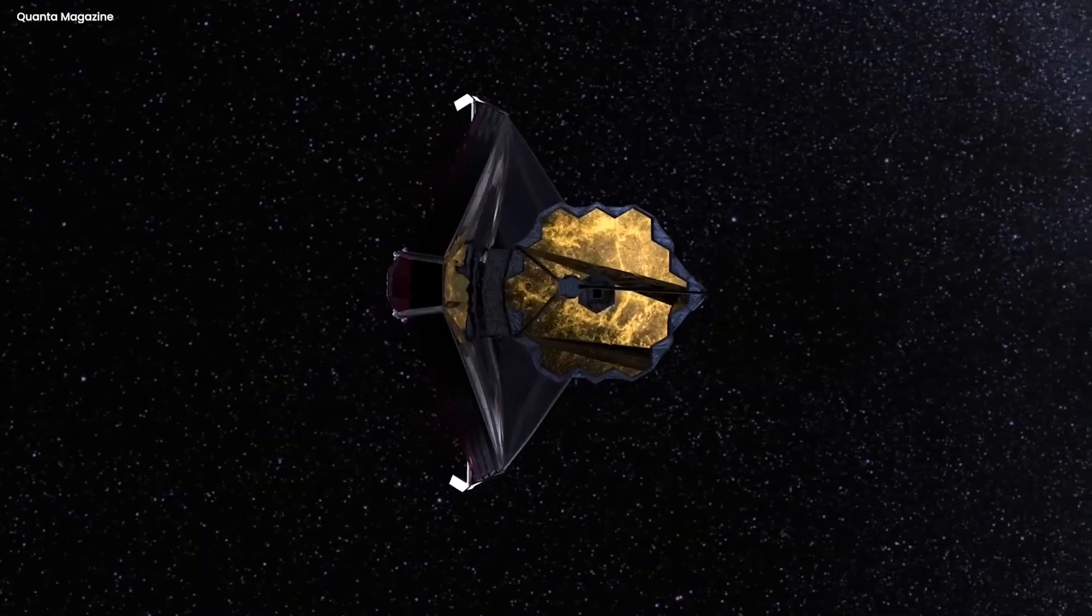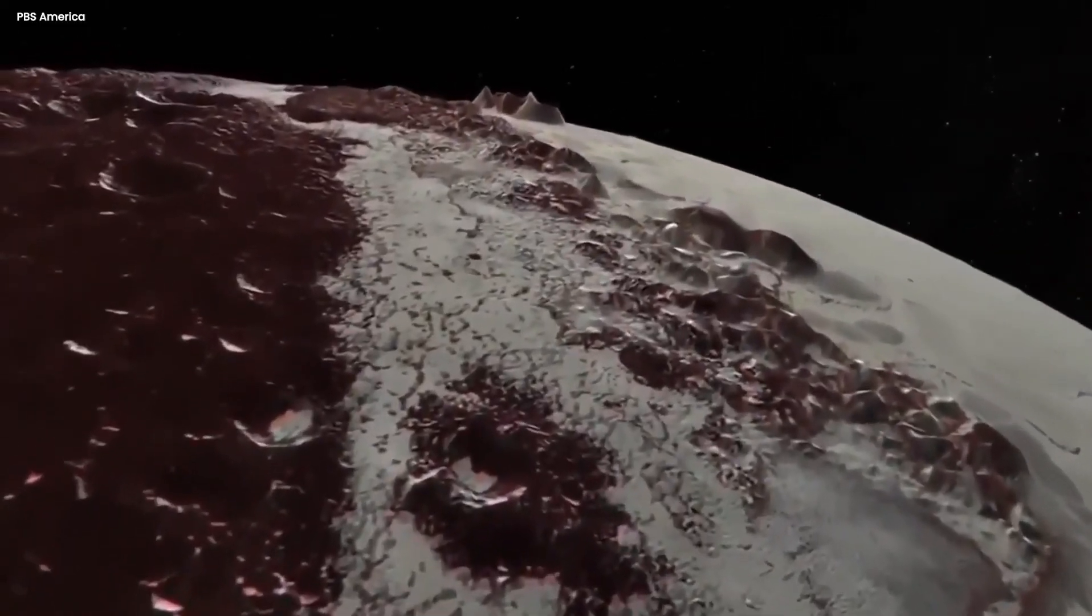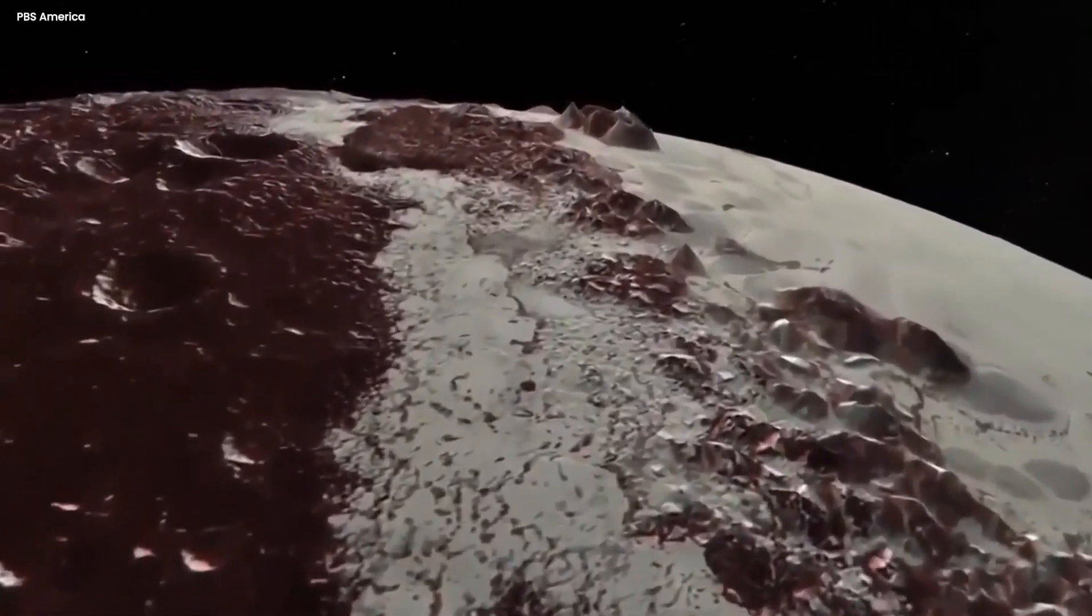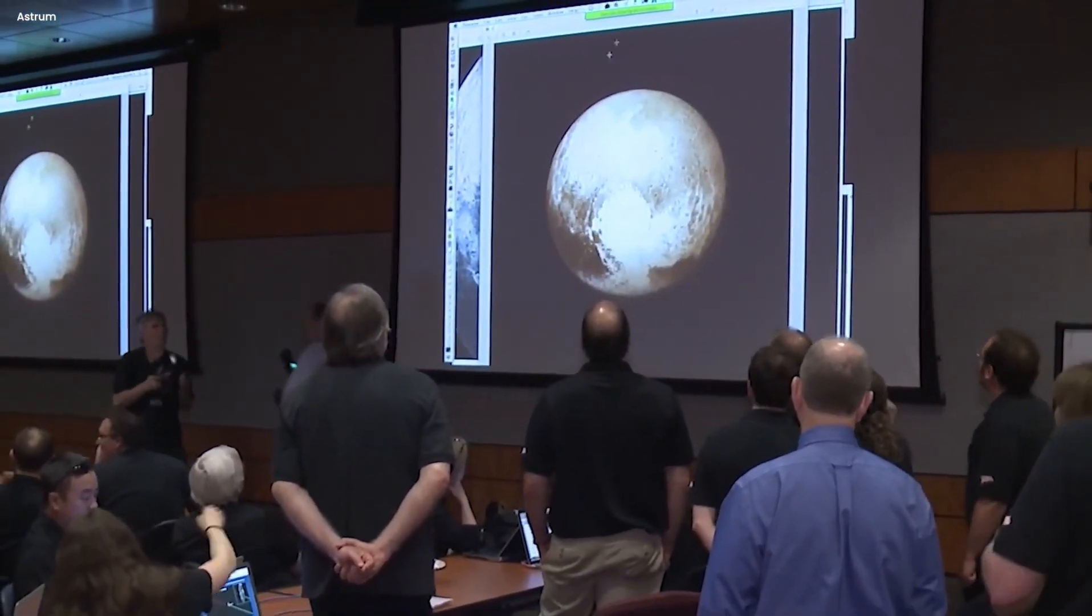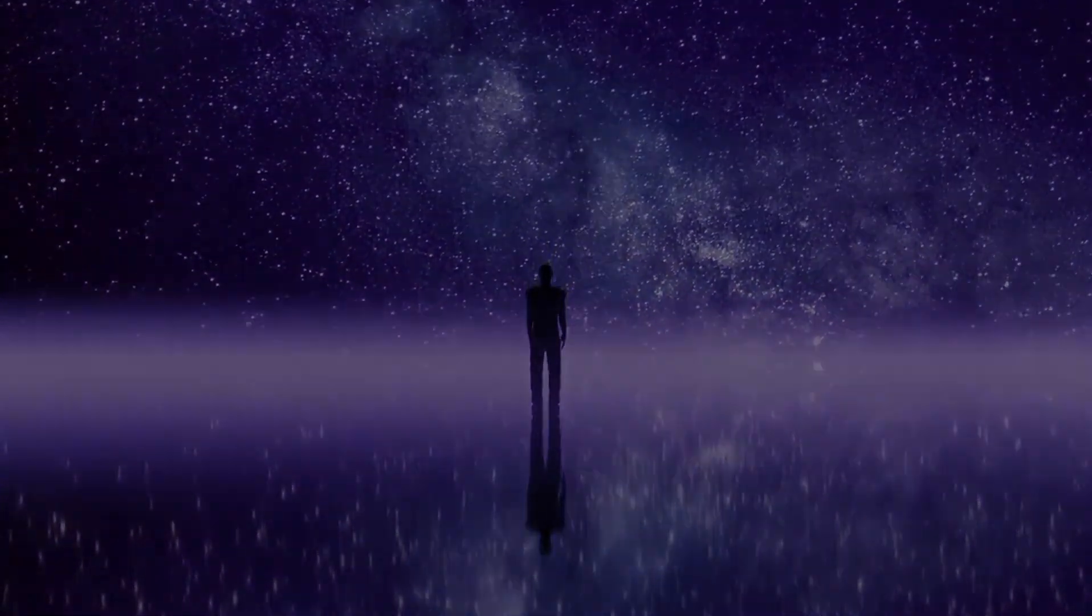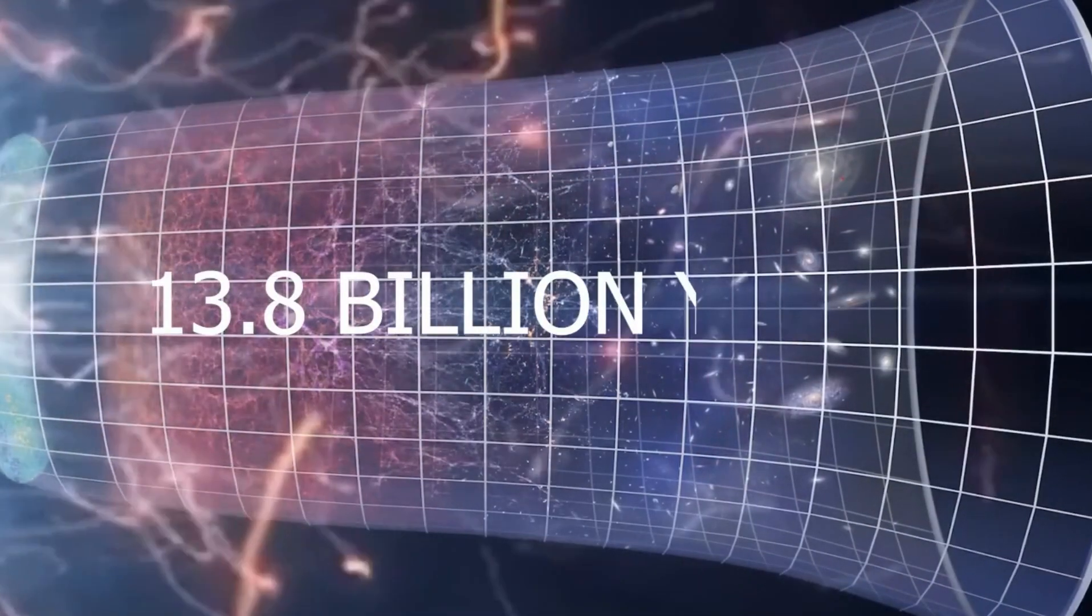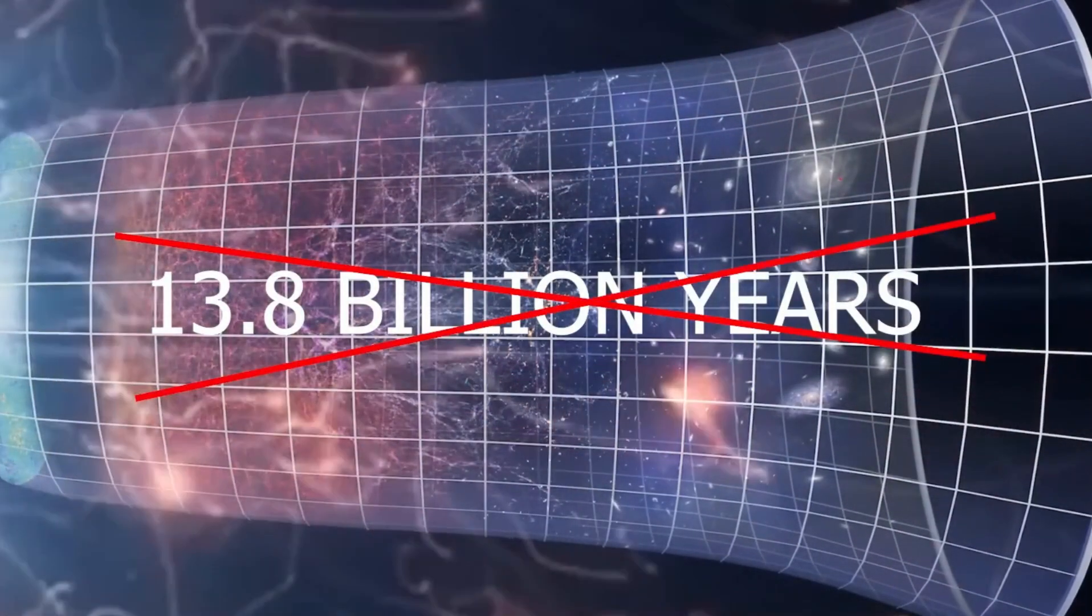The James Webb Space Telescope, or JWST, was built to revolutionize our understanding of the universe. Stationed 1.5 million kilometers away from earthly interference and chilled close to absolute zero by its tennis-court-sized sunshade, the telescope's giant segmented mirror and exquisitely sensitive instruments were designed to uncover details of cosmic dawn never before observed.